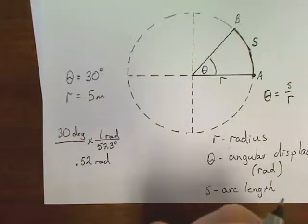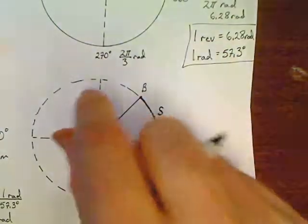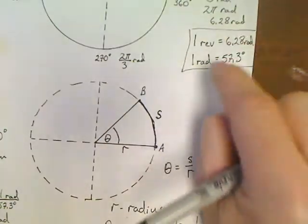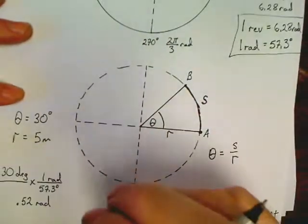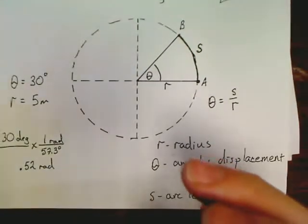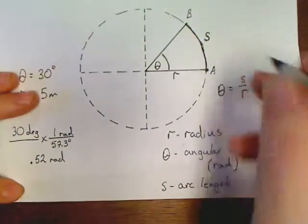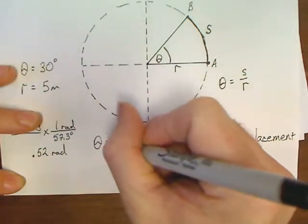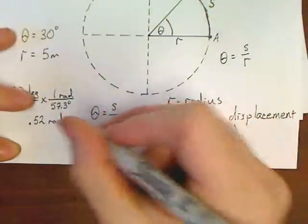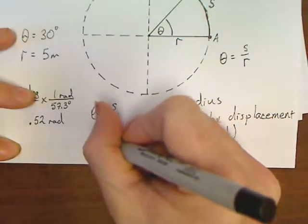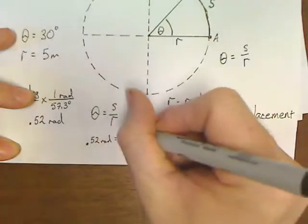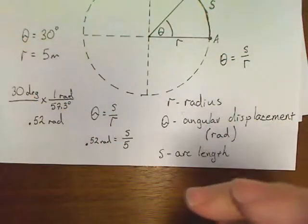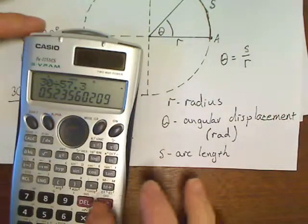Most of the first problems in this chapter, like your very first homework question, it's just going to want you to do conversions. It might give you three revolutions and say convert to radians or degrees. That's all your first thing is that you're going to be doing. So let's see what we can get into here. Theta equals S over R. So I'm going to rewrite the equation. So theta is 0.52 rads equals S over 5.